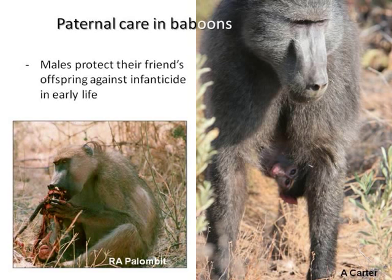Pursuing this research on paternal care further, I recently found out that these male friends with whom females associate are usually the fathers of the offspring — we established that by carrying out paternity analysis on the babies and looking at whether that matches the identity of the male protecting them. More recently it emerged that these bonds between father and offspring don't occur only in early life but last much longer. When the baby is young, it may be protection against infanticide, but as the baby grows up, fathers help them access good quality food — a very precious resource in that challenging environment. This story attracted quite a lot of media attention this week on BBC Nature and Planet Earth.